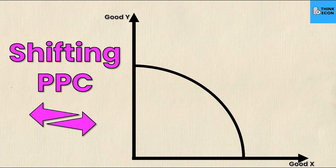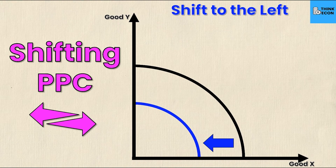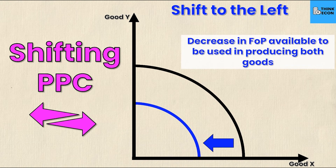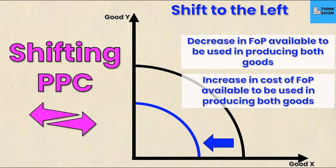The first movement we'll look at is a shift to the left of the PPC. Both the x and y intercepts have moved by the exact same amount. This can be caused by either a decrease in the factors of production available to be used in producing both goods, or an increase in the cost of the factors of production for both goods. It's important to emphasize both goods simultaneously — if it weren't both, it would be a pivot. A shift to the left means I can now produce less of good Y and less of good X.